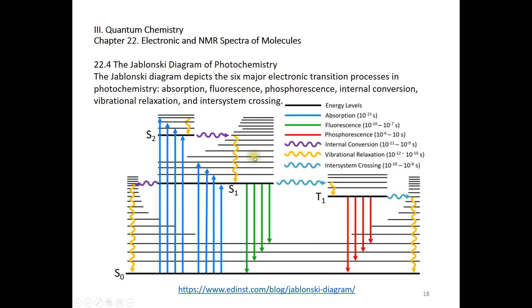Now let's look at another process that involves the flip of the electron spin — this is called inter-system crossing. Inter-system crossing goes from the S1 excited state to the T1 excited state, requiring a flip of the spin of one electron. This is a spin-forbidden process, so it is usually slow going from S1 to T1. After going from S1 to T1, the molecule can still undergo vibrational relaxation from higher to lower vibrational energy levels.